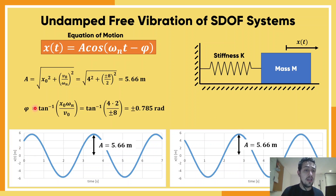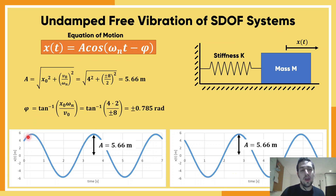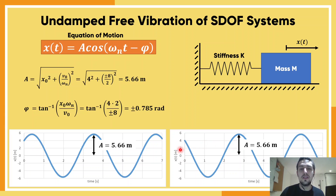Before we finish, the phase angle φ is equal to 0.79 radians. It's not that important for design, but here is what it means: a cosine wave normally starts at its peak (its amplitude), but in this case the wave is either slightly delayed or slightly anticipated. The angle φ tells you how much of that shift you have in your wave.